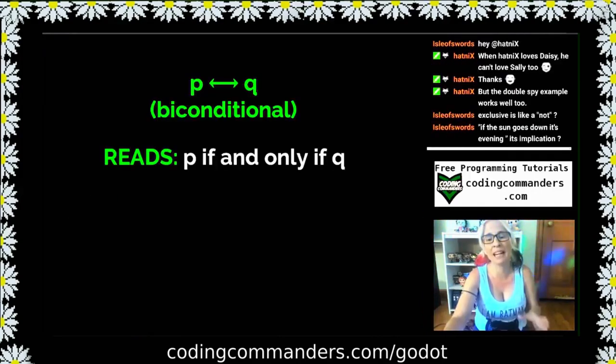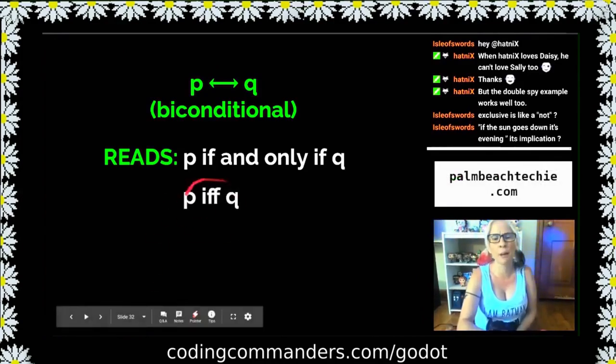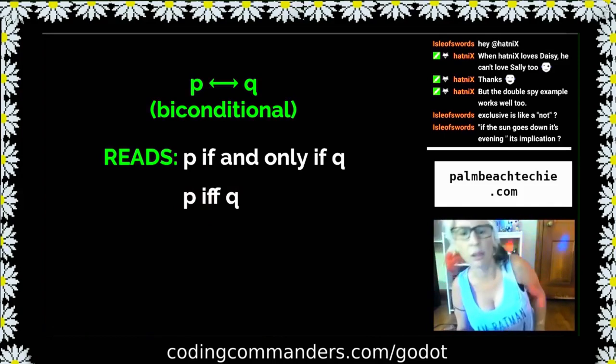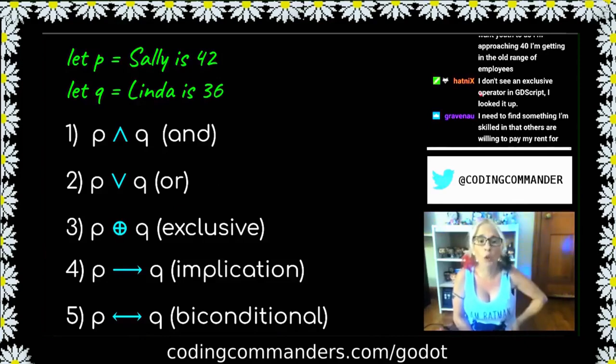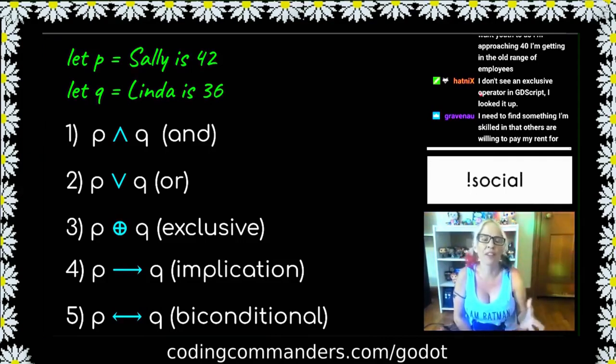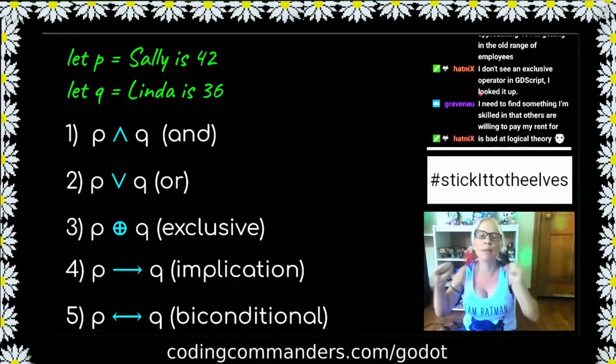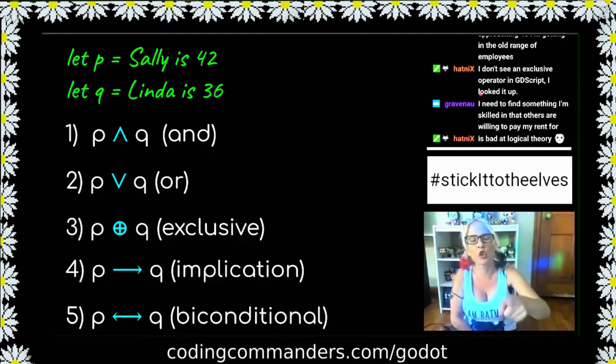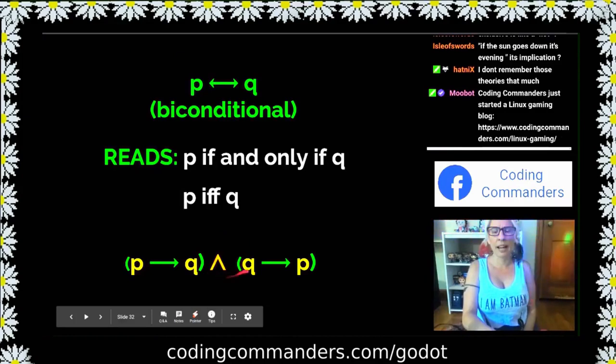Biconditional reads p if and only if q. You also write it like this. Some people write it like this. Do you remember the IFF? Didn't they have that in basic or am I remembering that wrong because I'm getting it confused with my mathematical training as a youngster? Sally is 42, if and only if Linda is 36. That's p if and only if q. What this means is if p then q and if q then p. It works both ways. If Sally is 42, Linda's 36. If Linda is 36, Sally is 42. It goes both ways. P implies q and q implies p.